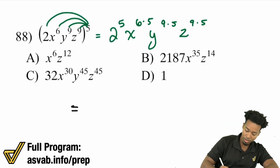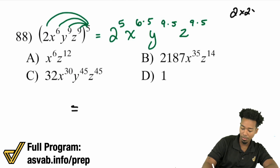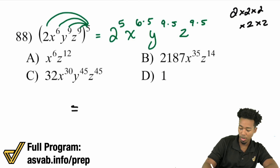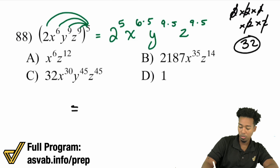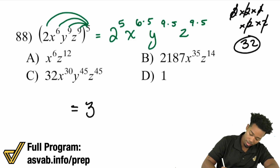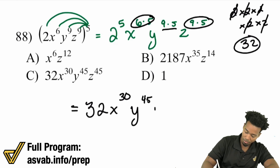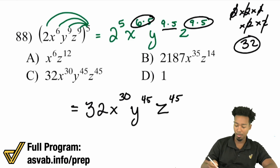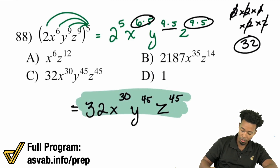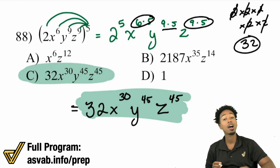When you write your final answer: 2 to the power of 5 is 2 times itself 5 times — that's 4, 8, 16, 32. 2 times itself 5 times is 32. Then 6 times 5 is 30, and 9 times 5 is 45. So the final answer is 32 x to the power of 30, y to the power of 45, z to the power of 45.